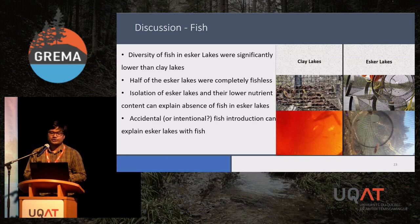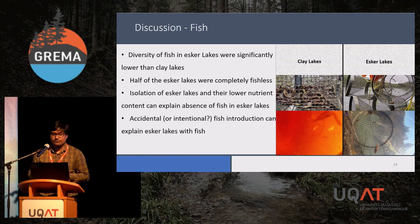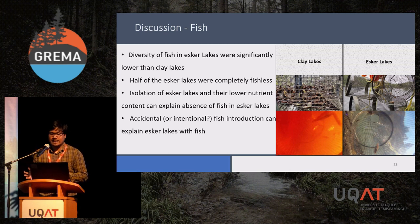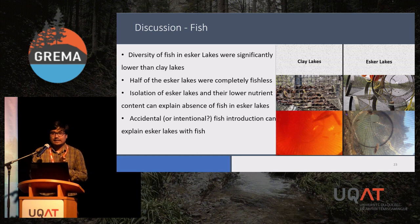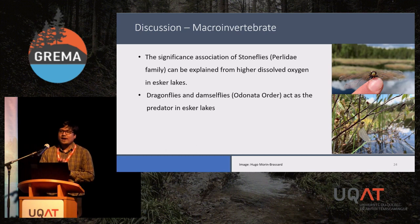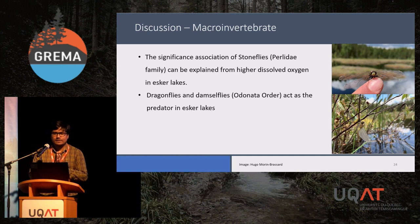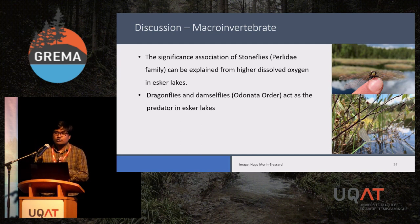For fish, the diversity in ESCR lakes was very low. Half of the ESCR lakes didn't have any fish. The isolation of ESCR lakes and their lower nutrient content can explain the absence of fish in ESCR lakes. However, accidental or intentional fish introduction can explain the presence of fish in some ESCR lakes.